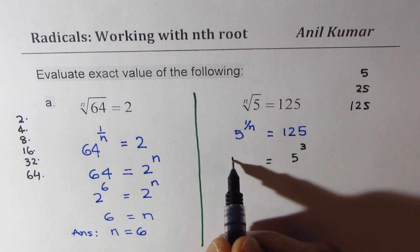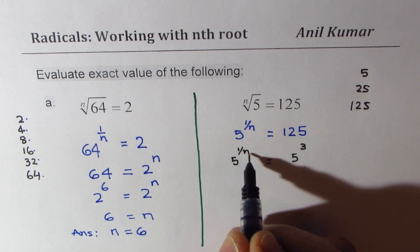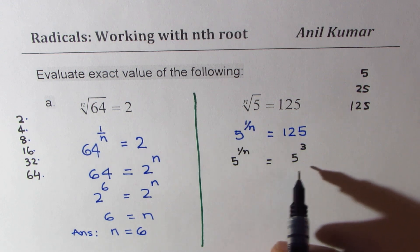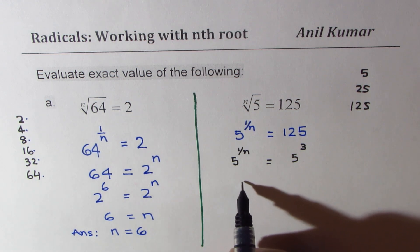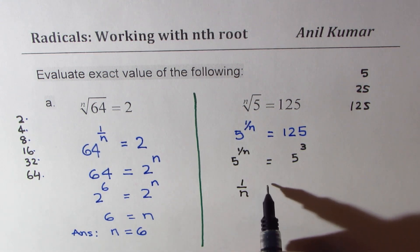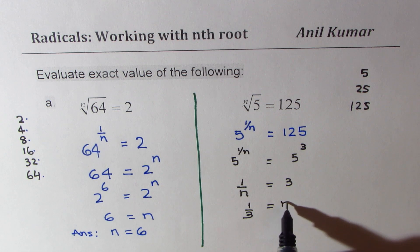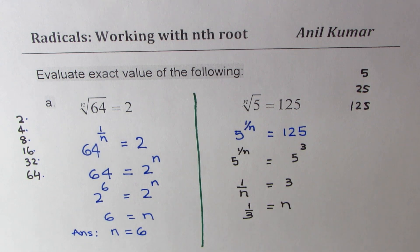So we can write 5 to the power of 1 over n equals 5 to the power of 3. Since the base 5 is common, exponents should be equal. So 1 over n equals 3, or 1 over 3 equals n. And so the index in this case is 1 over 3. So our answer now is n equals 1 over 3.